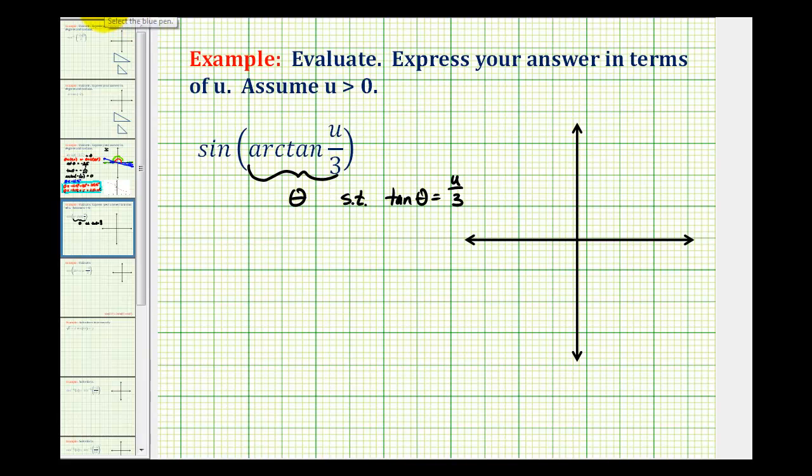So let's go ahead and model this angle on the coordinate plane. And we're assuming u is positive, so our angle theta must terminate in the first quadrant. So it might look something like this. Let's call this theta.